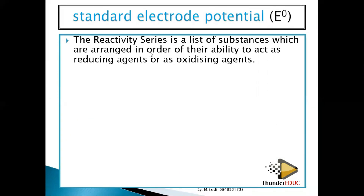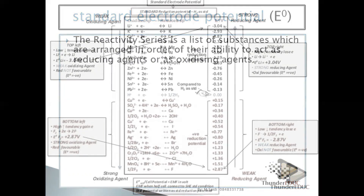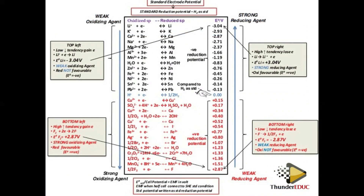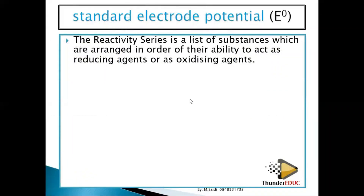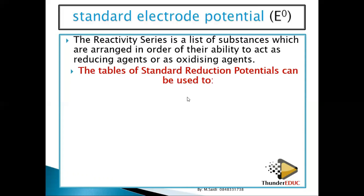which are arranged in order of the ability to act as reducing agents or oxidizing agents. We are going to look at which one is a strong reducing agent and which one is a weak reducing agent. If you understand that, you know how to interpret the activity series and will be able to know which one is going to be on the cathode and which one on the anode.